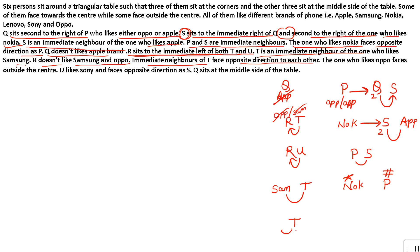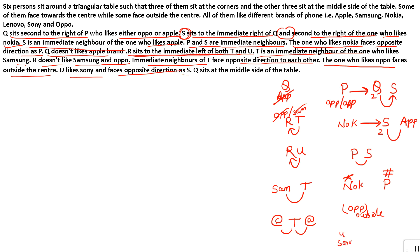T's two immediate neighbors will always face opposite directions to each other, so we put different signs on them — copyright and at-symbol. The one who likes OPPO faces outside the center — OPPO person is looking outward. U likes Sony and faces the opposite direction to S — so U and S face opposite directions. We put different signs on U and S as well — a rectangle sign to remember they face opposite directions.